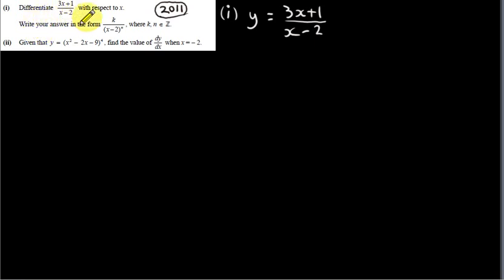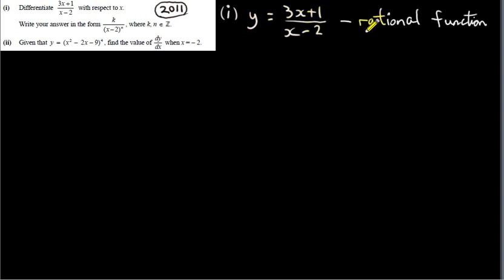Differentiate 3x plus 1 over x minus 2 with respect to x. I'm going to refer to this function as y. This type of function is known as a rational function. It's called rational because we have a ratio of two functions — 3x plus 1 all over x minus 2.